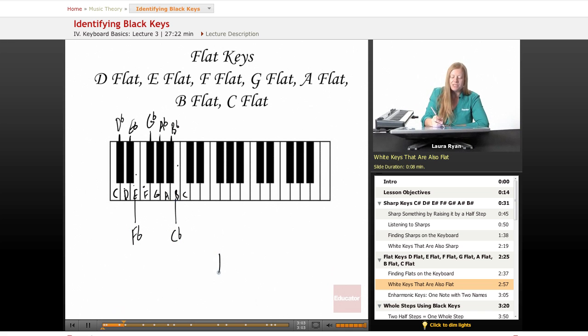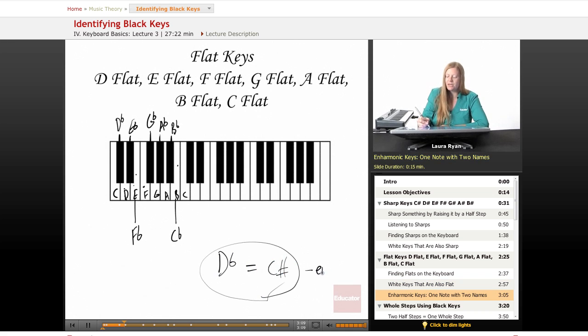So when we have the D flat, it's also C sharp. This is enharmonic. Enharmonic is a name, a word that refers to one note being called two different things. So, let's move on.